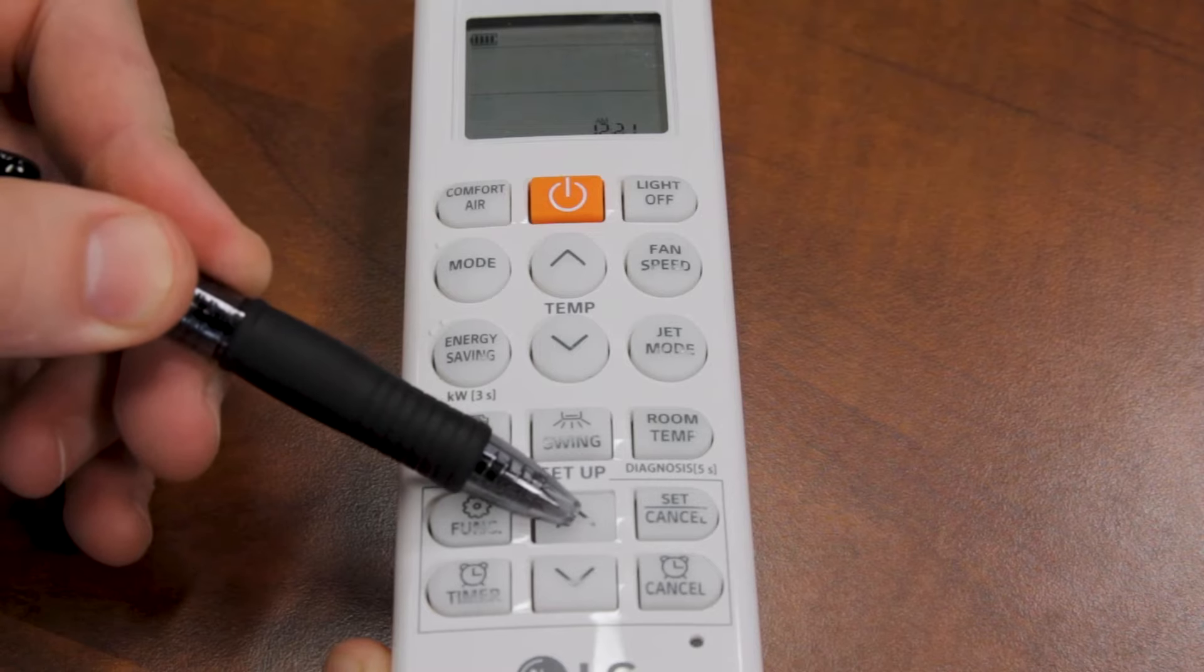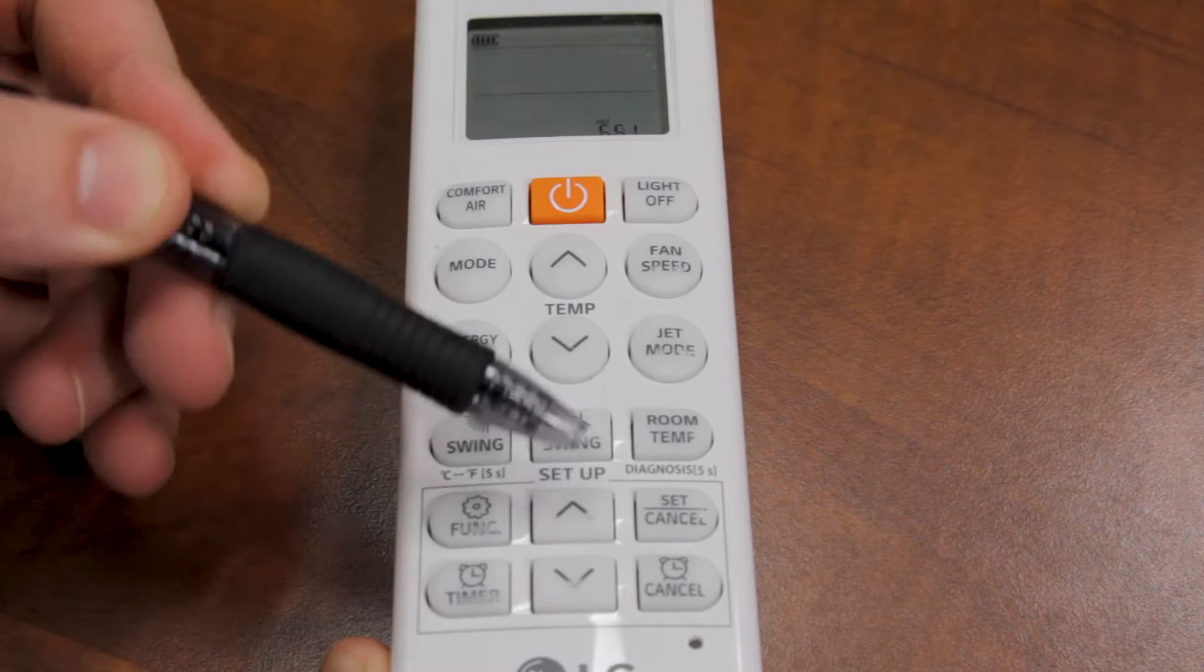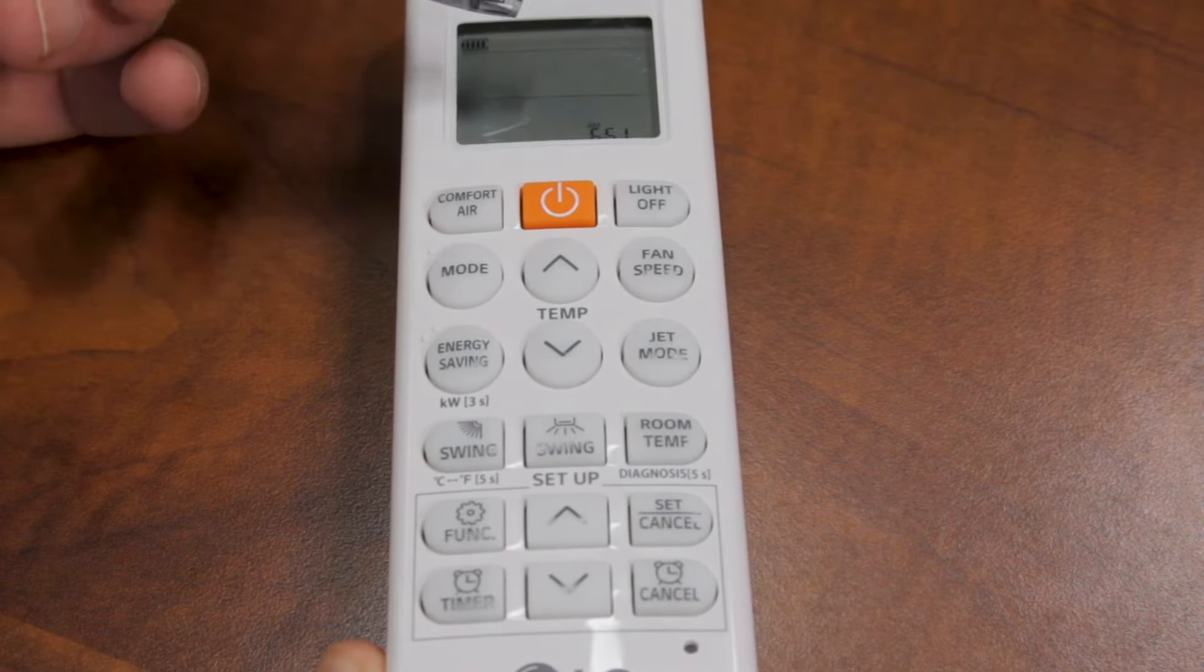You would press the up and down button to change the time, and when you're at the right time you hit set. That will stop flashing and that's going to be your time.